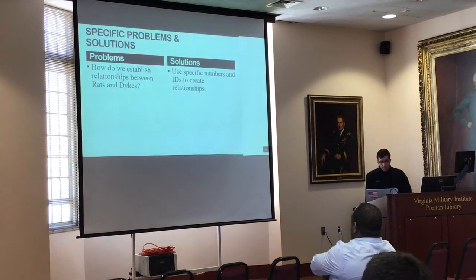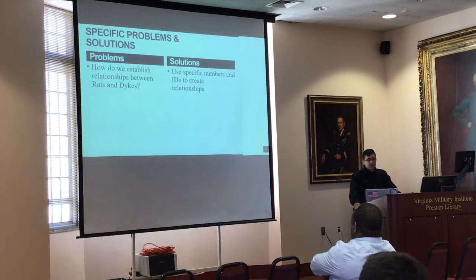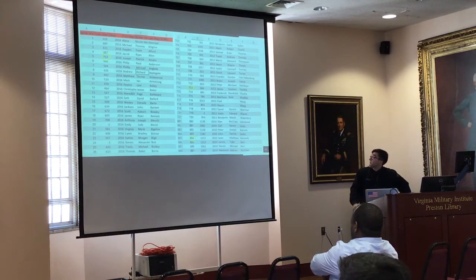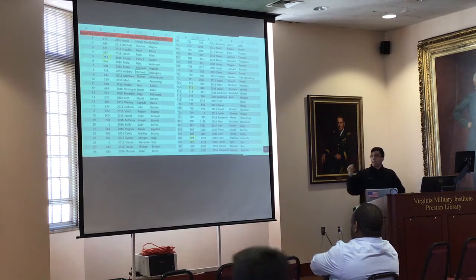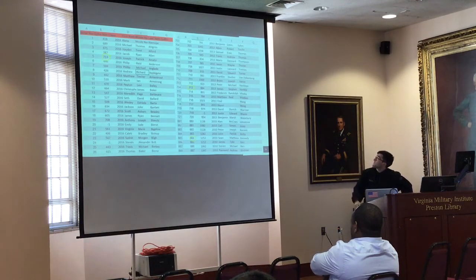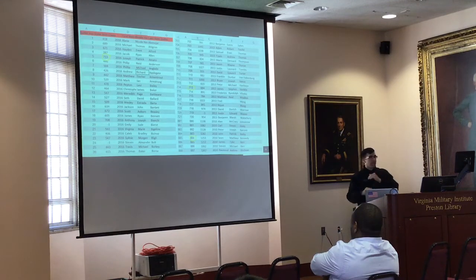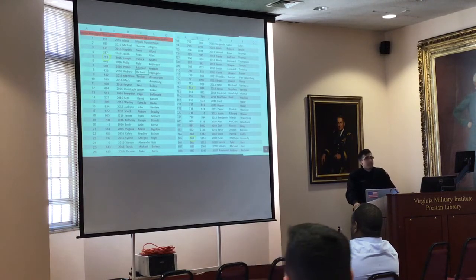A specific problem: how do we establish the relationship between rats and dikes? We use specific numbers and IDs to create relationships. On the left side of the screen, the first yellow circle encompasses 713 — that dike number is used to find the ID of the person who belongs to you. We search for Joseph Amato and find James Van Wee, whose ID is 713. To go further, you find James Van Wee's dike number — 884 — and find whose ID that belongs to: Sean Matthew Kennedy. That relationship goes back as far as possible; once it reaches negative 1, that means there's no further background information.